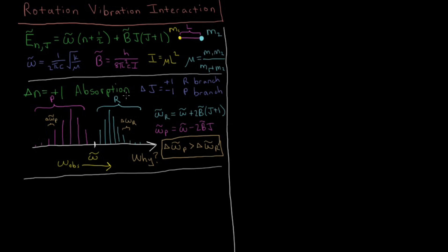But if we look at actual rovibrational spectra we'll see that's not exactly the case. If you stare at it for enough time you'll see that the spacings between adjacent bars in the P branch is larger than that for adjacent bars in the R branch. So we want to answer in this video the question: why is that the case?